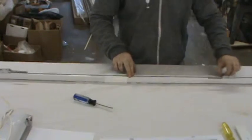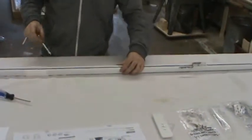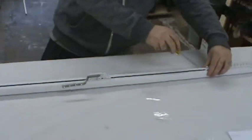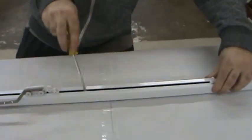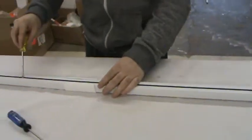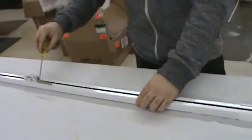Also sometimes during shipping, the actual belt inside the track comes out of the channel. So what I like to do is just get a flat head screwdriver and just make sure that the green belt is housed properly inside the channels, inside the track.